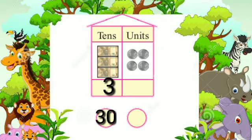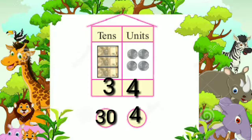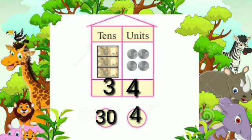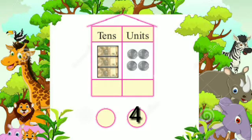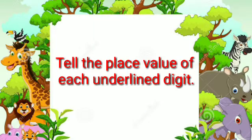In this example, there are 3 nodes in the tens place, so we get 30 coins or units. That's why the place value of 3 is 30. In the units place there are 4 open coins, so its place value is 4. The number is 34. Now, tell the place value of each underlined digit.